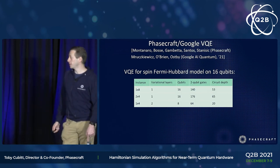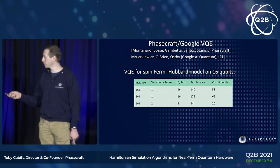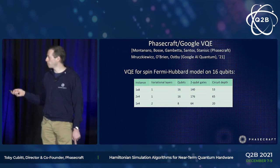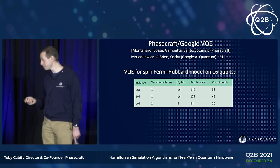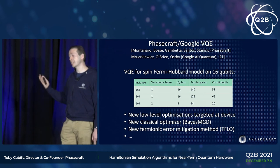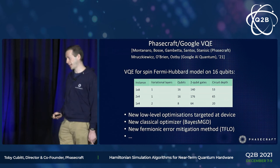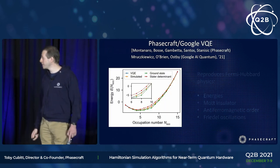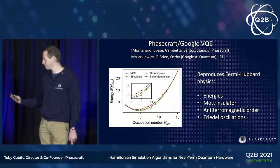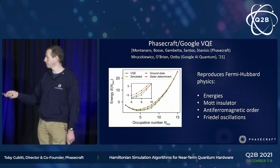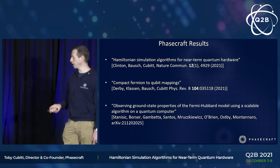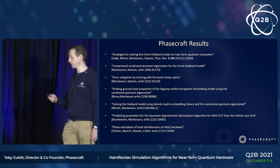In the last few minutes, I want to mention one other paper, hot off the press. My co-founder Ashley Montanaro, together with the PhaseCraft team and people from Google Quantum AI Lab, just posted a paper on Monday running VQE for a spin Fermi-Hubbard model — the biggest instance ever run on real hardware. Again, it's the same story: they don't achieve this with standard off-the-shelf textbook approaches. It involved new low-level optimizations targeted at actual hardware, a new classical optimizer for the VQE outer loop, and new fermionic error mitigation methods. They showed actual experimental results reproducing the physics of the Fermi-Hubbard model very nicely.